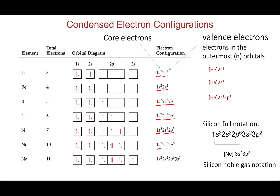Up to neon, all orbitals in energy levels 1 and 2 are completely filled, making all of them core electrons. For sodium, energy level 3 is partially filled, so those are the valence electrons. Core electrons do not participate in chemical reactions — all chemical properties are determined by valence electrons. To focus on valence electrons, we replace the core electrons with the corresponding noble gas configuration. For the elements from lithium to neon, the core electrons correspond to the 1s² helium configuration.